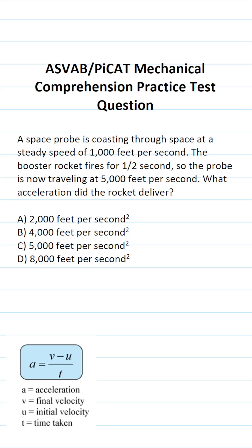This mechanical comprehension practice test question for the ASVAB and PiCAT says: A space probe is coasting through space at a steady speed of 1,000 feet per second.